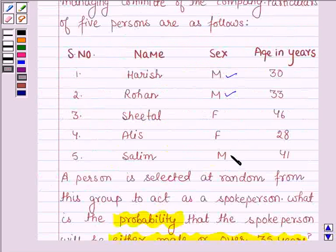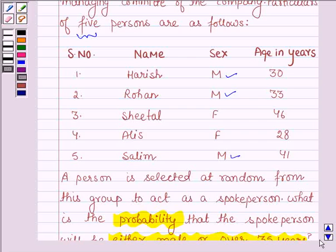Harish, Rohan and Salim. And the total number of possible outcomes, that is, the number of persons chosen are 5. Therefore, probability of A is 3 upon 5.